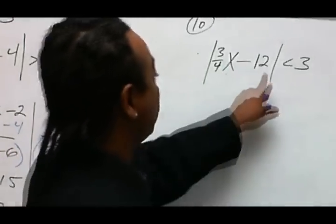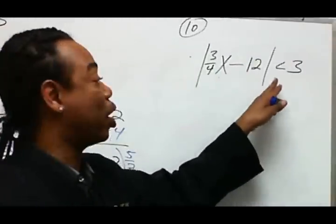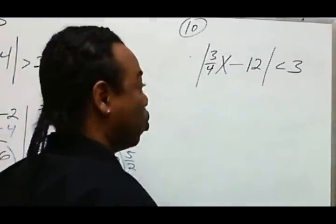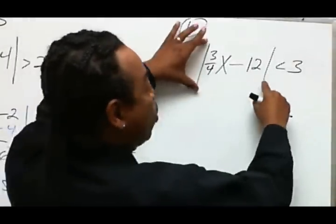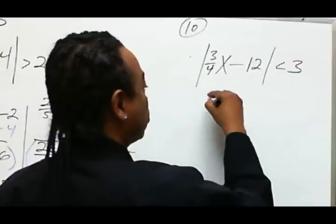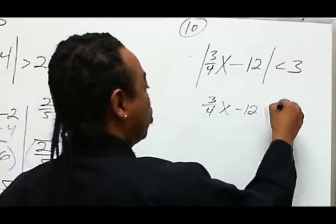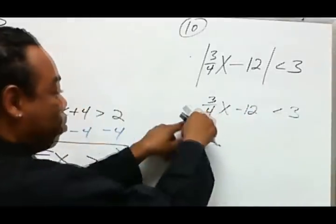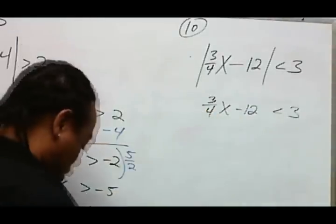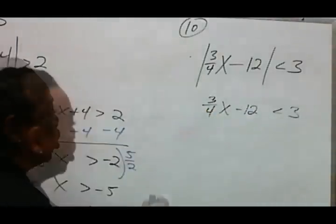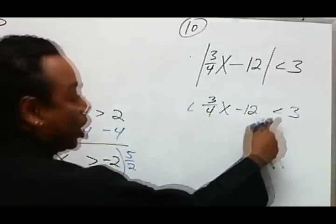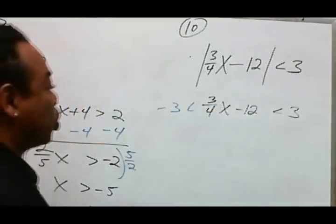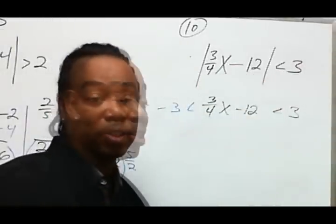Number 10. We have an absolute value followed by a less than. Therefore, we're going to use the property for that, which means to remove the absolute values. So: 3/4x minus 12, less than 3. Then repeat the sign on the left side and change the sign for the right. This is the procedure for dealing with an absolute value followed by a less than.